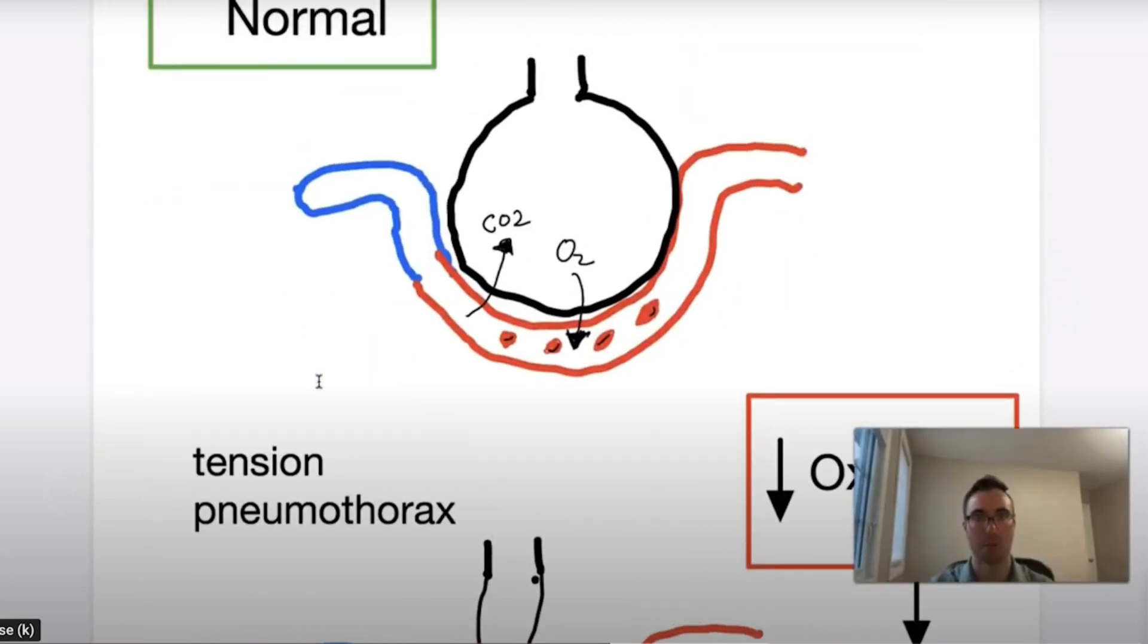So we examine the actual alveoli. Obviously that's where gas exchange occurs. Oxygen comes down, crosses the alveolar capillary membrane. 98.5% of all of our oxygen is bound to hemoglobin, which gets distributed around our body. The rest of it is dissolved in plasma, but that's our normal alveoli.